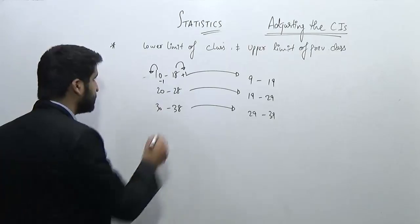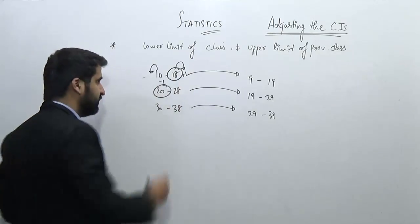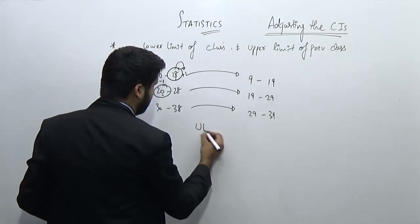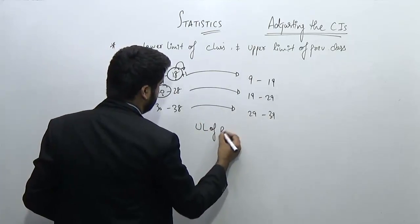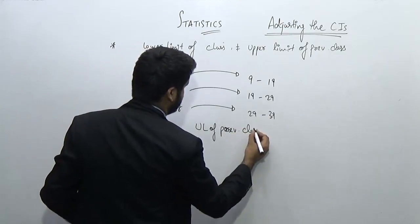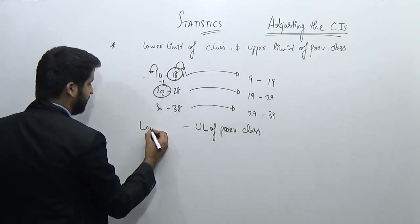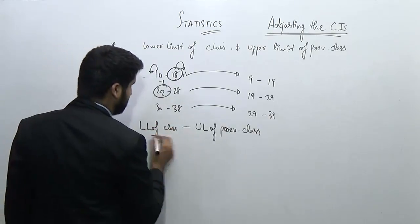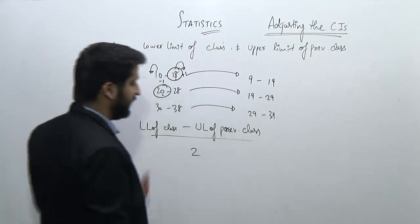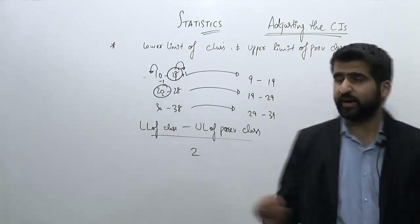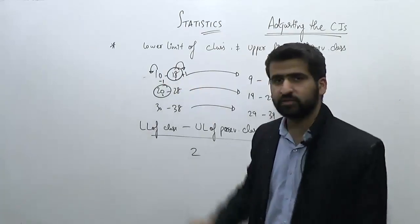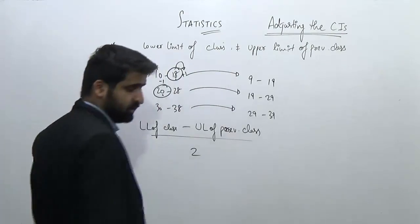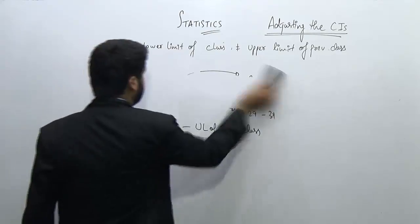Now, what to subtract and what to add? You look at the difference between the lower limit of the current class and the upper limit of the previous class — so lower limit of class minus upper limit of previous class — and divide by 2. That numerical value is what you add to the upper limit and subtract from the lower limit to adjust the data.